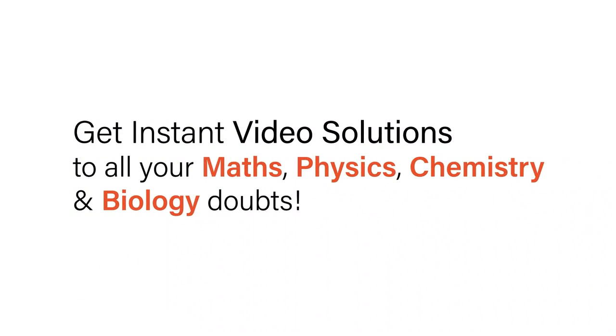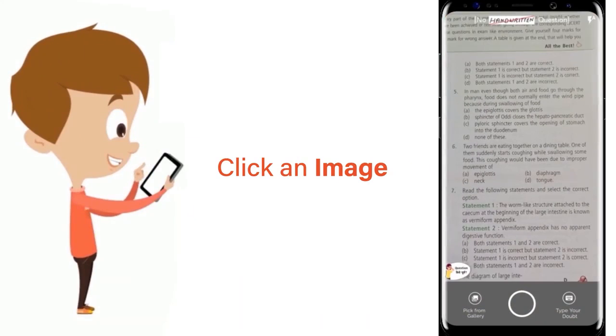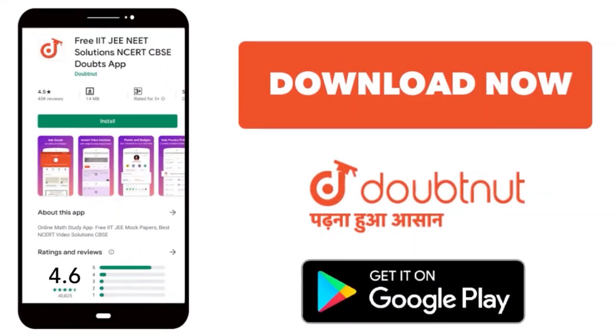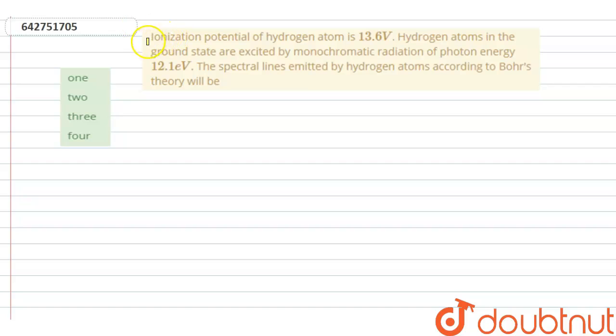With Doubtnet, get instant video solutions to all your maths, physics, chemistry, and biology doubts. Just click the image of the question, crop the question, and get instant video solution. Download Doubtnet app today. Hello students, our question is about ionization potential.